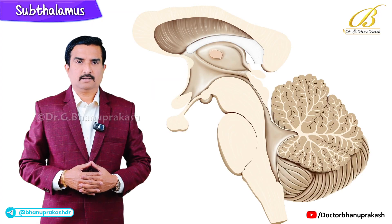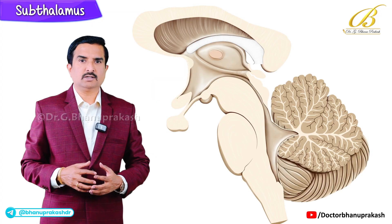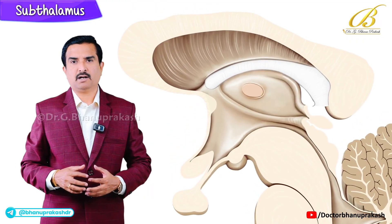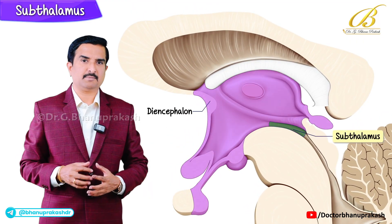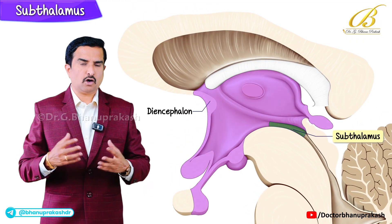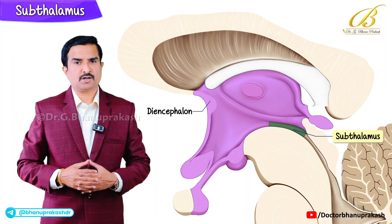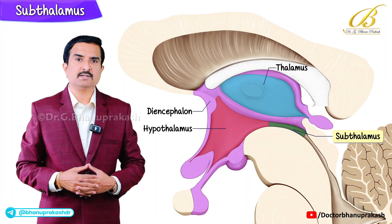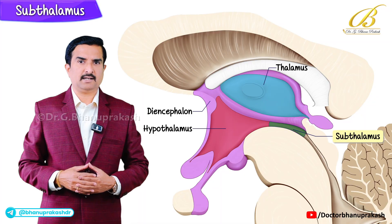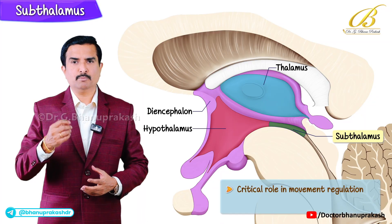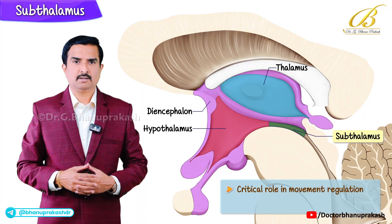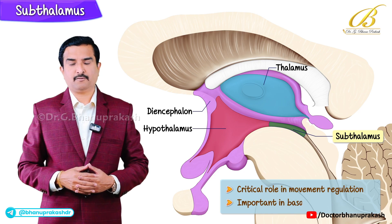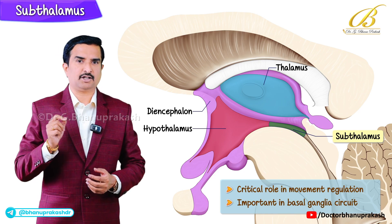Hello everyone. Let's now turn our focus to a small but important part of the diencephalon — the subthalamus. Although it's often overshadowed by structures like the thalamus and hypothalamus, the subthalamus plays a critical role in movement regulation, and understanding it is especially important when studying the basal ganglia circuitry.